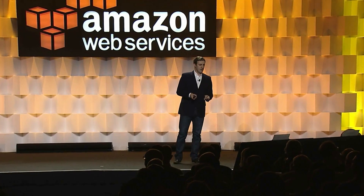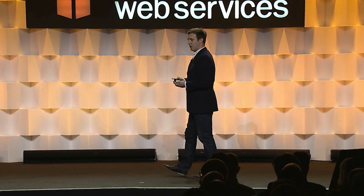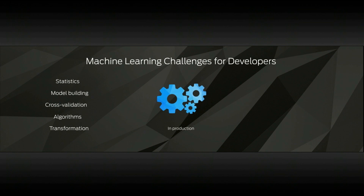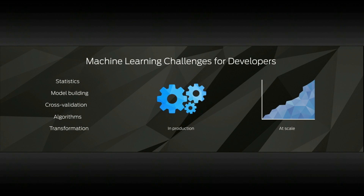The challenge of machine learning for developers is that, whilst there's some overlap in skills, there's a lot of specialized knowledge required. You need to be deep on statistics, know how to build and validate models, select and tune and optimize different machine learning algorithms, and know how to work and transform your data into a good format for predictive models. These challenges become compounded in production — you need a highly available system — and even worse at scale, both for ingesting data and for using those predictions inside your application.